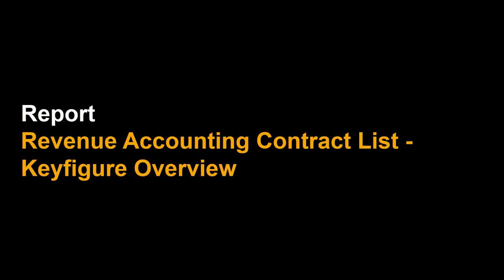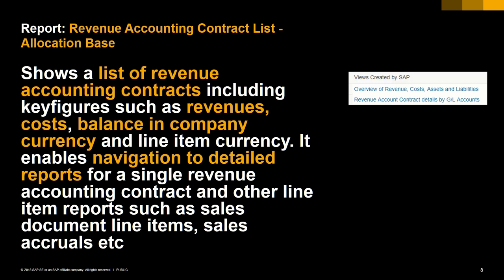The second report we would like to introduce is a list of revenue accounting contracts with a key figure overview. The purpose of this report is to show, in a key figure overview, revenues, costs, or balances such as contract assets, contract liabilities, and deferred values for costs and for revenues. Two views have been provided out of the box: one to see the key figure structure, and on the other side a drill-down for the entire contract by GL accounts.